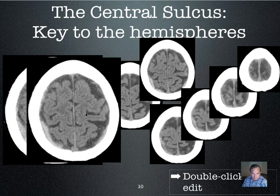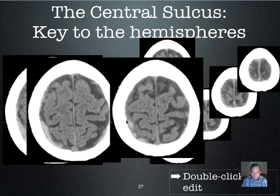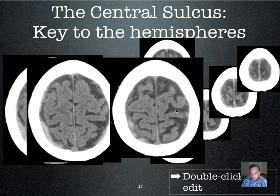At another level, the same technique applies: cingulate sulcus, forward and to the side — central sulcus. Once you see the central sulcus, you know the motor cortex of the frontal lobe is in front and the sensory cortex of the parietal lobe is behind. Going up higher, there's really nothing else quite like this little mustache structure, so it remains identifiable at multiple levels of the brain.